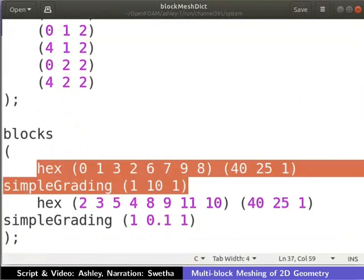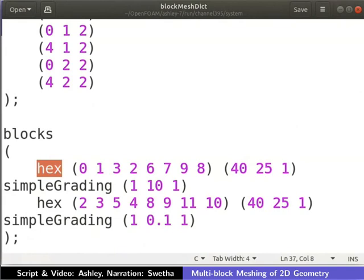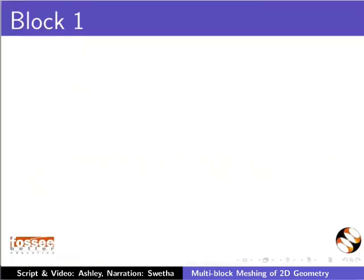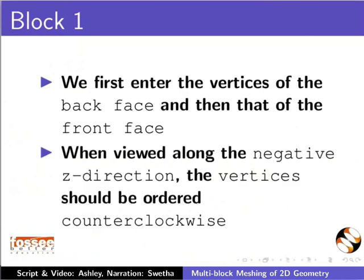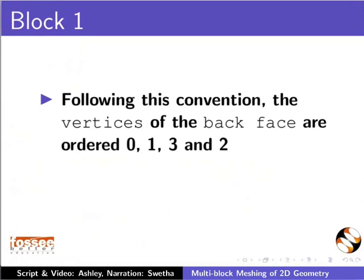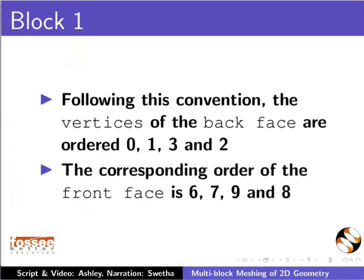The blocks are numbered as shown. Block 1 is defined as shown. We use hexahedral blocks for meshing. We will enter the vertices that define block 1. We first enter the vertices of the lower xy plane. To define block 1, we first enter the vertices of the back face and then that of the front face. When viewed along the negative z direction, the vertices should be ordered counterclockwise. Following this convention, the vertices of the back face are 0, 1, 3 and 2. The corresponding order of the front face is 6, 7, 9 and 8. The vertices of block 1 are therefore entered in the order as shown.